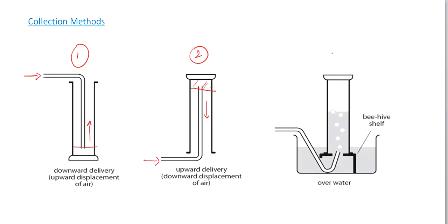The third collection method is used to collect a moist sample of the gas over water. If you have a gas entering here, the gas is going to be collected in this region, and the gas will be a moist sample.